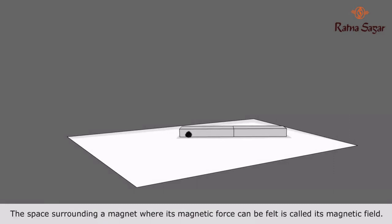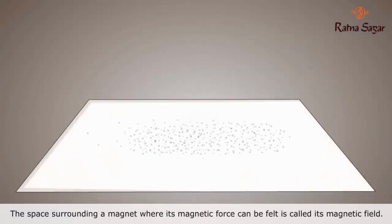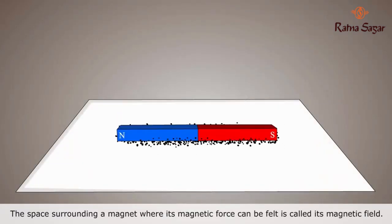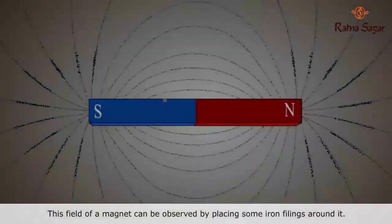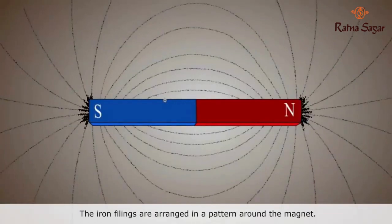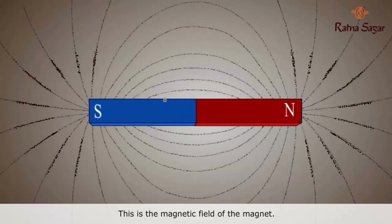The space surrounding a magnet where its magnetic force can be felt is called its magnetic field. This field of a magnet can be observed by placing some iron filings around it. The iron filings are arranged in a pattern around the magnet. This is the magnetic field of the magnet.